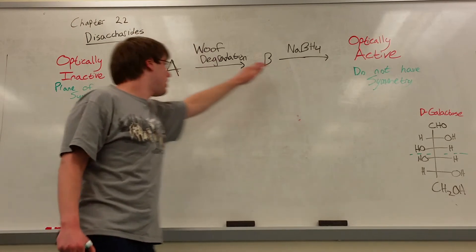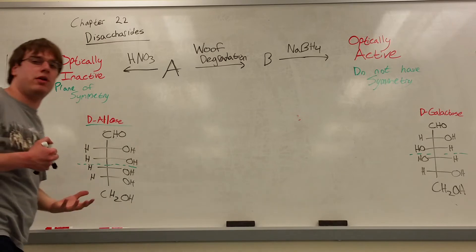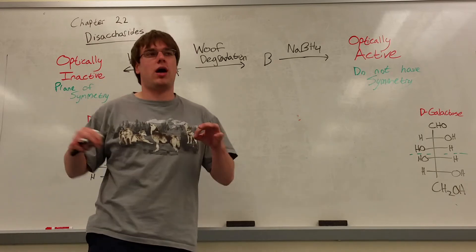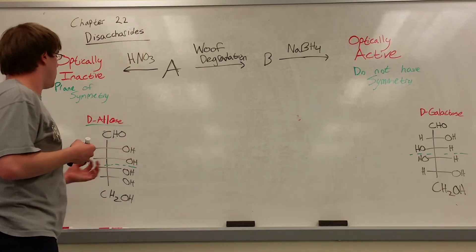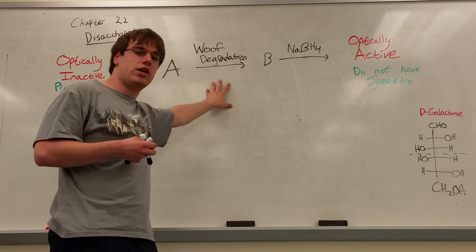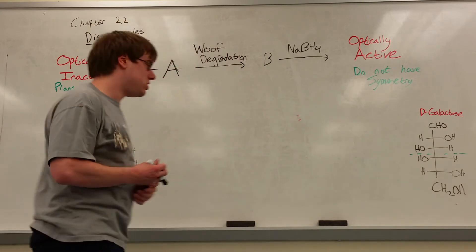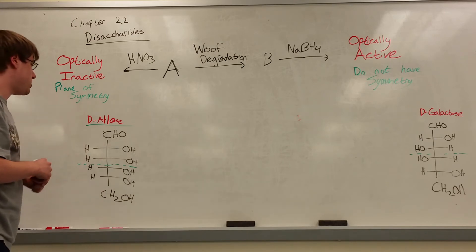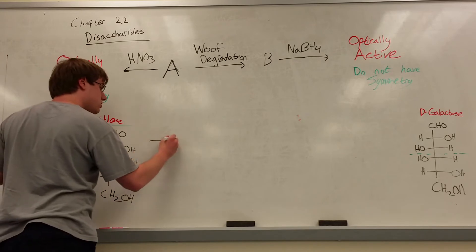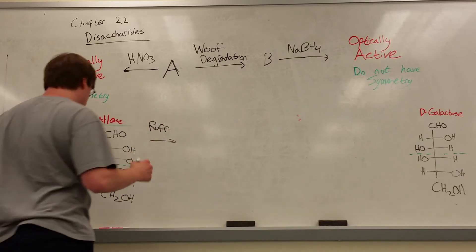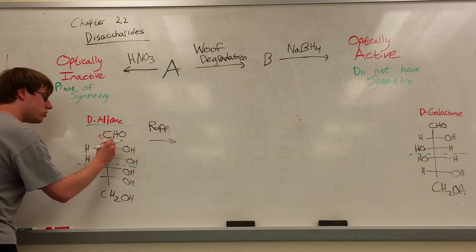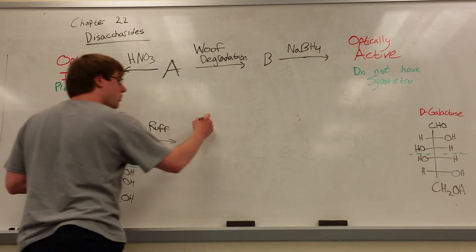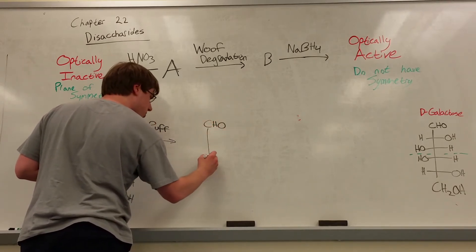Now we go toward structure B. In roadmap questions, once you're down to two or three options, you go in another direction to identify which one works. We take A and apply the Ruff degradation, which chops off the top carbon and turns the next carbon down into the new CHO. For D-allose numbered one through six, we chop carbon one off and carbon two becomes the new CHO, giving a five-carbon sugar.